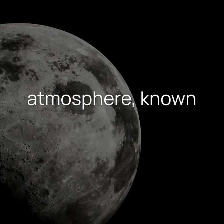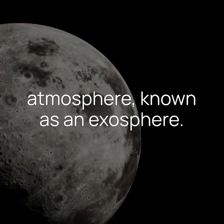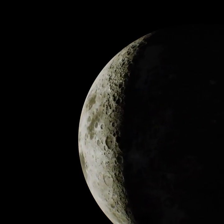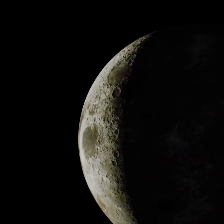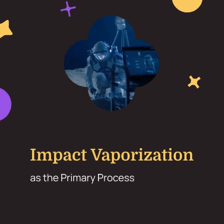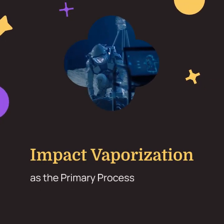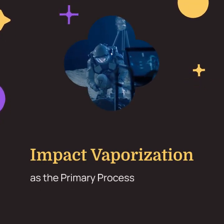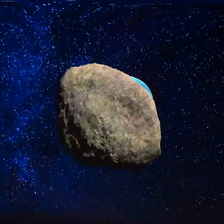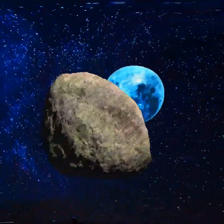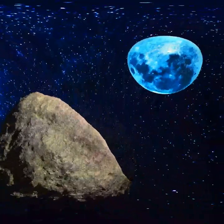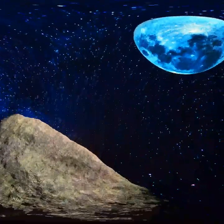The moon has a barely-there atmosphere known as an exosphere. Scientists have long wondered how this thin layer of atoms forms and sustains itself over billions of years. Researchers from MIT and the University of Chicago have pinpointed impact vaporization as the primary process — meteorites and micrometeoroids continuously bombard the moon, vaporizing atoms on impact and lofting them into the exosphere.